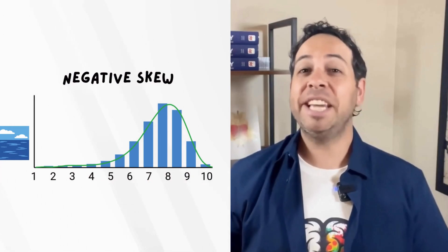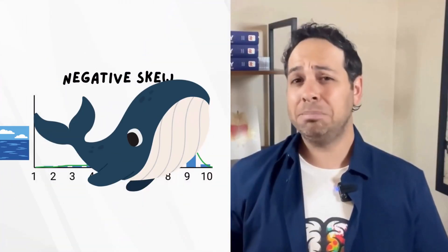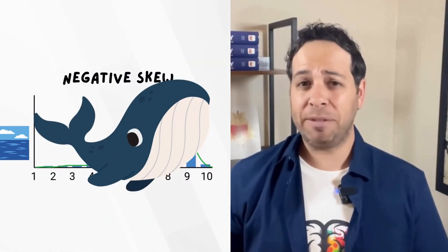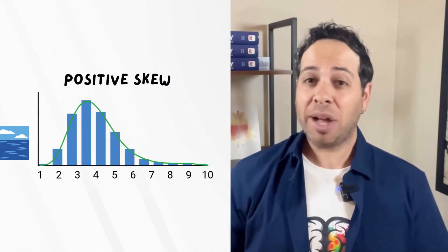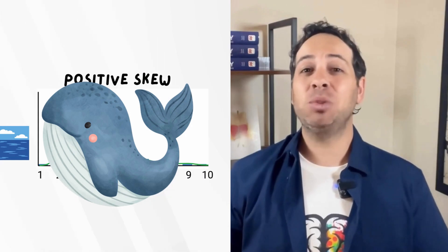Alright, here's an AP Psych memory hack. Think of a whale. If the tail points left, the whale is sad. That's a negative skew. He's swimming away from home. If the tail points to the right, the whale's happy. That's a positive skew. He's swimming toward home. Yes, you just pictured a whale on a graph. Mission accomplished.